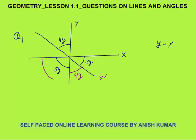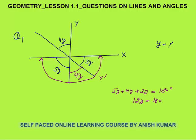Now you can see that these three angles lie on the same straight line: 5y, 4y, and 3y. We know that the complete angle on a straight line is 180 degrees. So 5y plus 4y plus 3y equals 180 degrees, giving 12y equals 180 degrees, therefore y equals 15 degrees.